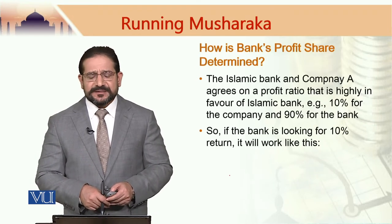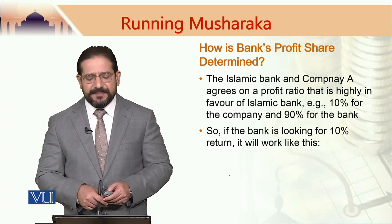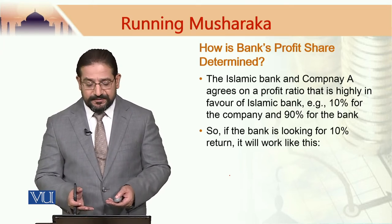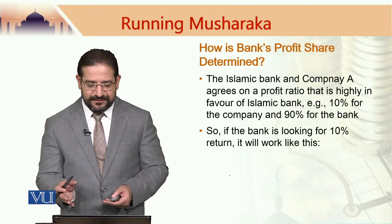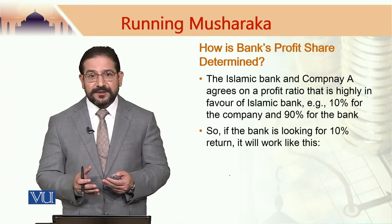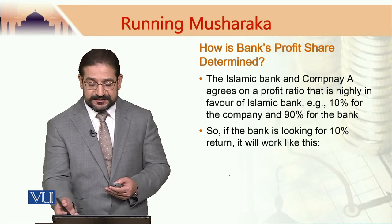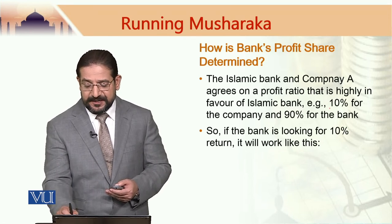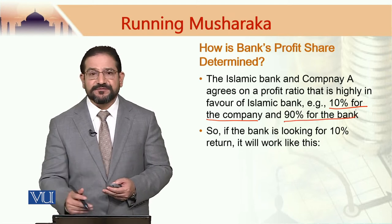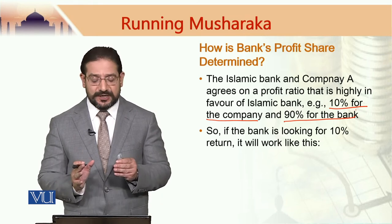How is the bank's profit share determined? An Islamic bank and Company A agree on a profit ratio that is highly in favor of the Islamic bank. The profit distribution ratio agreed between the two parties would favor the bank — for example, 10 percent of the profit may go to the company and 90 percent may go to the bank, at least to start with.